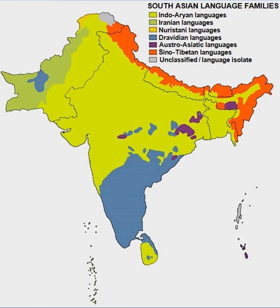The Nagari script descended from the Siddham script around the 11th century.